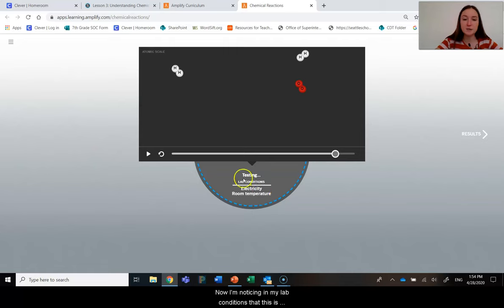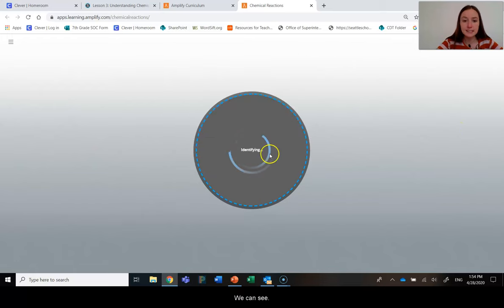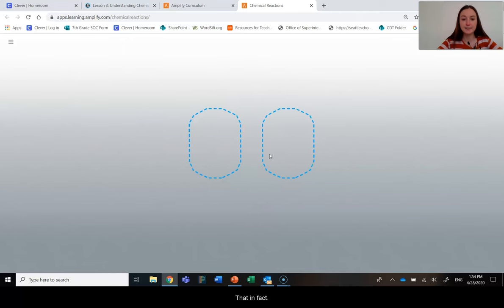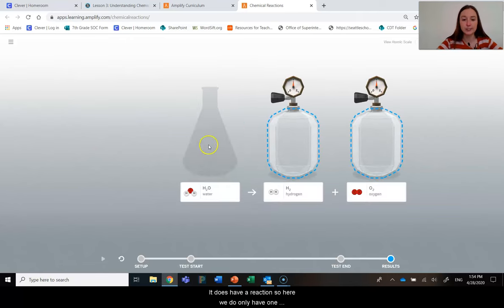Now, I'm noticing in my lab conditions that this is happening under the condition of electricity. So I don't think that water probably just reacts on its own. It seems like when electricity is run through it, we can see that, in fact, it does have a reaction. So here we do only have one starting reactant and two products. We started out with that water molecule. We saw it bumping around, breaking apart. The atoms rearranged into hydrogen gas and oxygen gas.